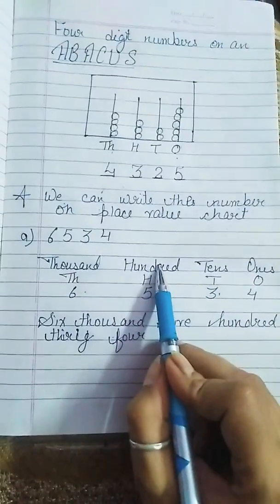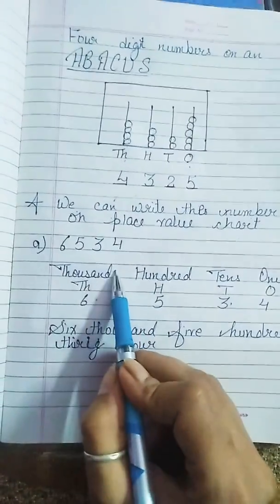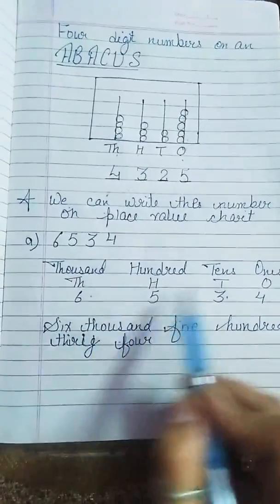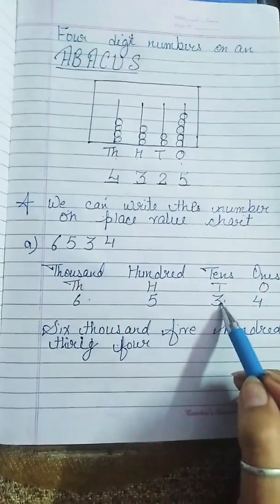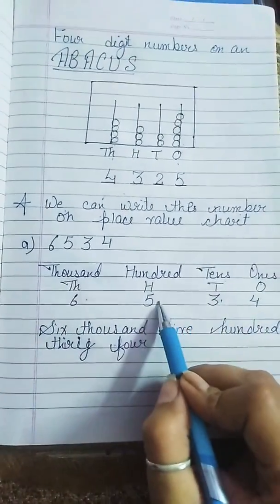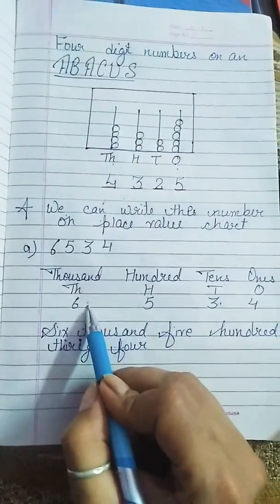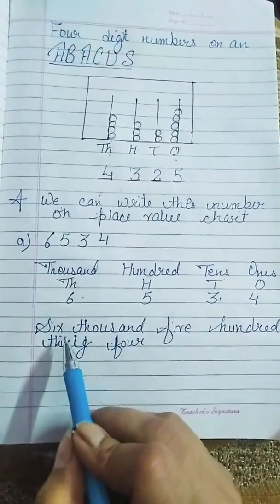So, here we can read it. 4 once, three tens, five hundred, six thousand. So, you can read it in number name me.